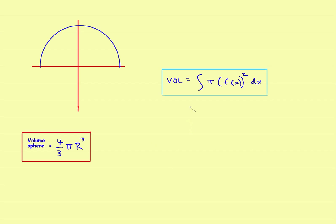Just a reminder: the volume of revolution around the x-axis is equal to the integral of pi times f of x squared dx. If you need a refresher, watch the previous video where this formula is derived. We'll use this to find the volume of a sphere.